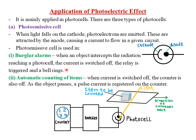The second application of photoemissive cells is automatic counting of items, used in supermarkets and manufacturing companies. When current is switched off, the counter registers a pulse. As items pass on a conveyor belt, each item blocks the light reaching the cathode, photoelectrons are not emitted, the circuit switches off, and that signal is amplified and registered on the counter.